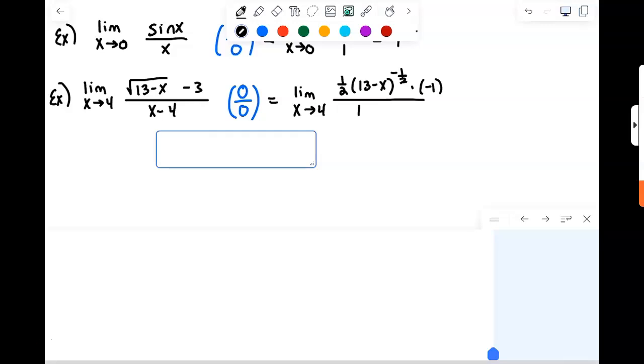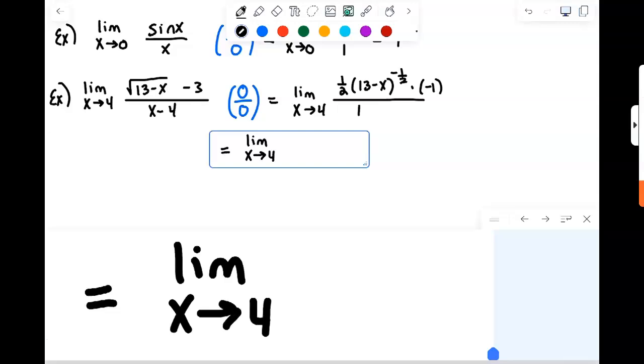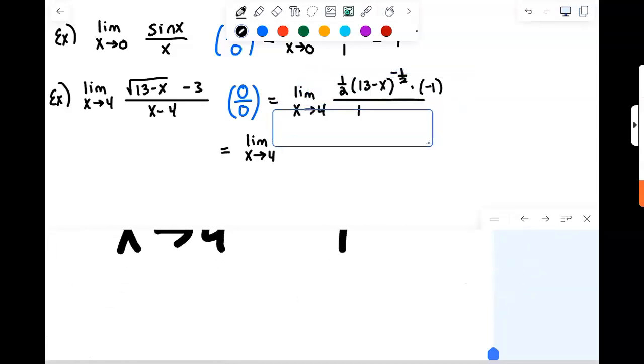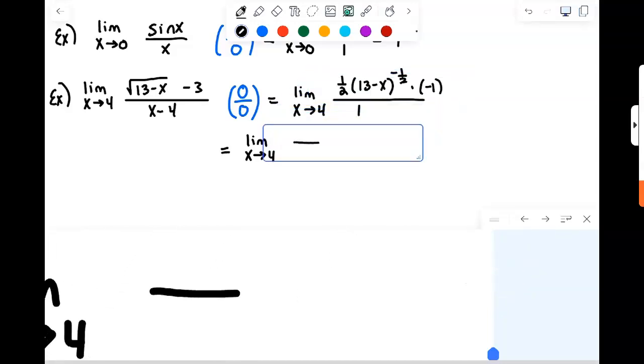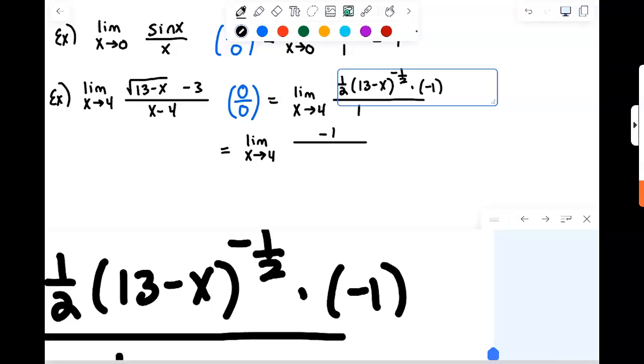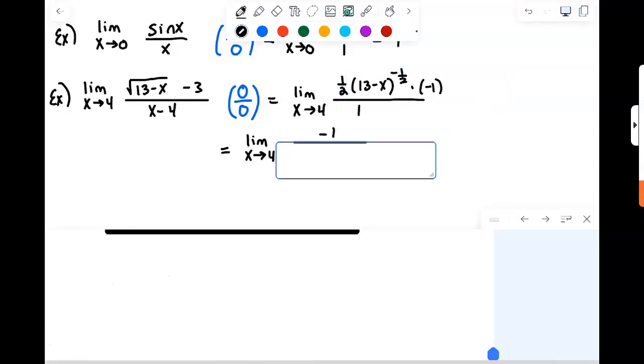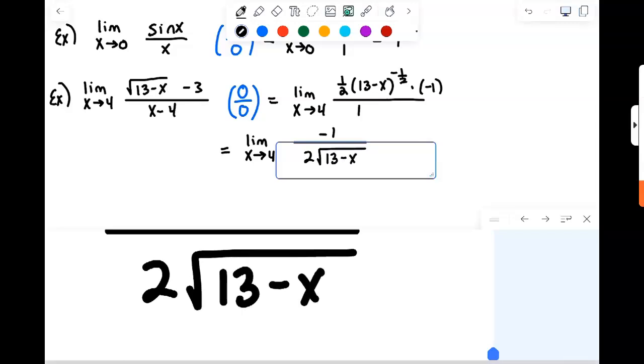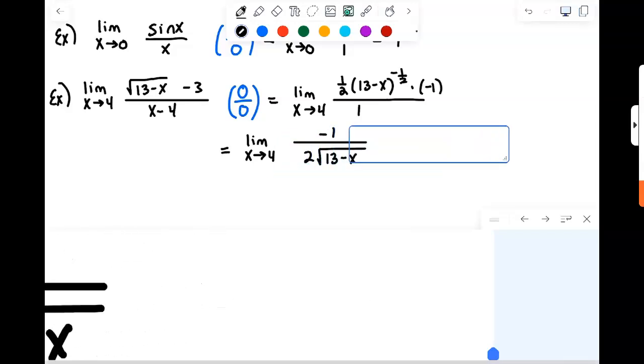And so now we no longer have a 0 over 0 limit. So just doing some rearranging of stuff, putting it into a format where we can talk about it. So limit as X approaches 4, the 1 half will go to the bottom, minus 1 will stay put up top, and move the X to the negative 1 half to the bottom as well, which will make that a square root.